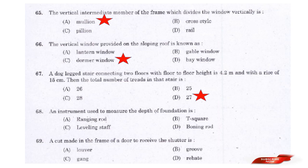Question: An instrument used to measure the depth of foundation is — options: Ranging rod, T-square, Leveling staff, Boning rod. Answer: Option D — Boning rod. The instrument used to measure the depth of foundation is a boning rod.